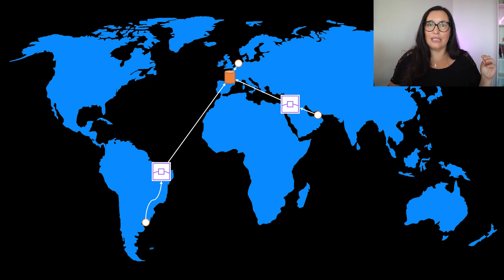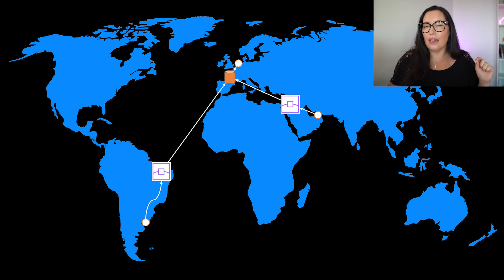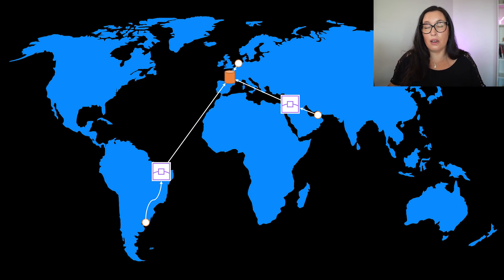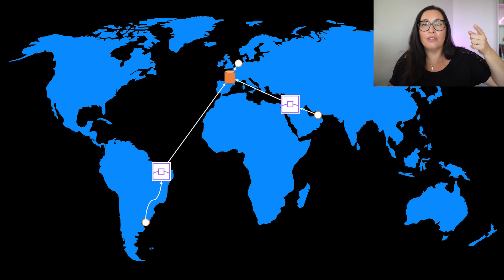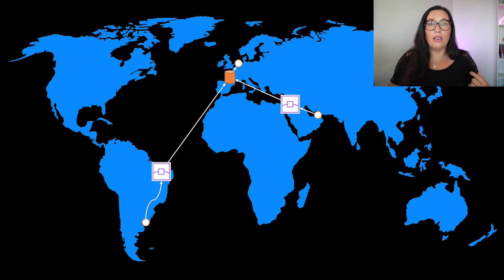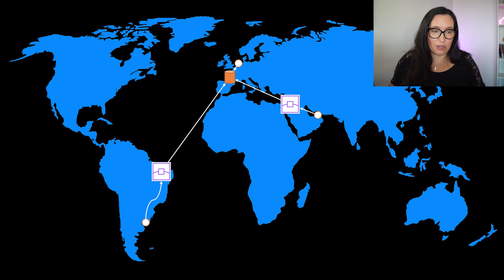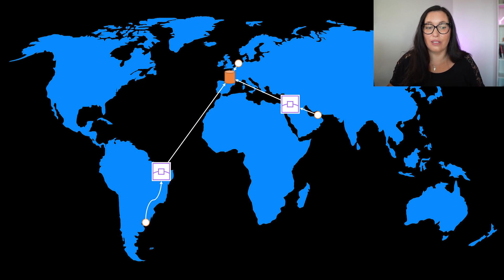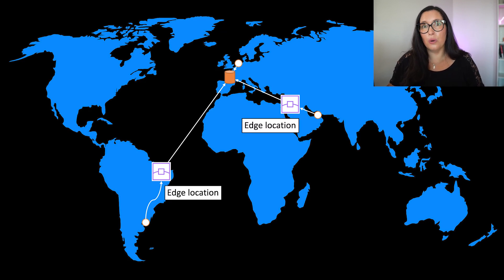That's why we have things in between that collect these files so there is less latency. We put these caches in different parts of the world — in this case you can see one in the north of Brazil and one in the Middle East. When the request comes from Brazil or Uruguay it goes to the edge of the cloud, which checks if it has the requested files. If it does, it returns them directly from there. In AWS these caches are called edge locations and there are around 400 of them around the world.